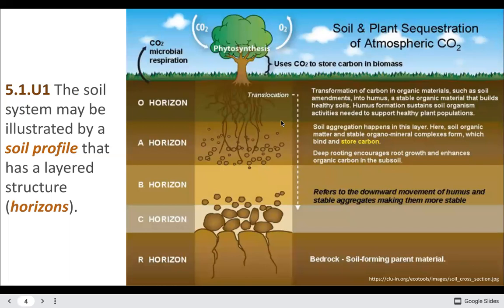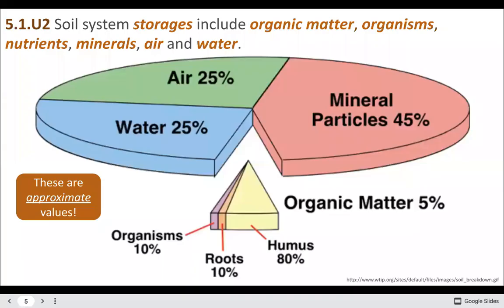The soil system may be illustrated by a soil profile that has a layered structure. You could use a mnemonic device to remember the order of the horizons. Sometimes you'll see an additional E horizon between the A and B horizons, which loses materials from the A horizon that then reaccumulate down in the B horizon. You can see the E horizon being a little more washed out.